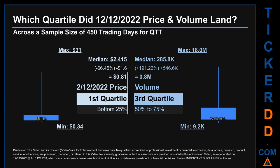Hello, my name is Maria. Which quartile did the 12th of December 2022 price and volume land? Across a sample size of 450 trading days, the maximum end-of-day price for QTT was $31 while the minimum was $0.34. Within that price range, the 12th of December 2022 price of $0.81 landed within the first quartile, meaning it was within the bottom 25% of all sampled end-of-day prices. The day's volume landed within the third quartile, that is within the 50% to 75% range of all sampled daily volume, which saw a max daily volume of $18 million and a minimum of $9.2 thousand. Quartiles tell us about the spread of a data set by breaking that data set into quarters, just like how the median breaks the set into half. Descriptively, QTT has a median price of $2.415. Therefore, the 12th of December 2022 price was lower from that middle marker by 66.45%, while the day's volume of $0.8 million was more than the median by 191.22%.